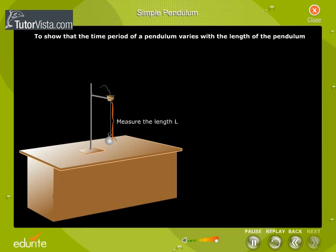Measure the length L from the middle of the bob to the lower edge of the split cork. Mark on the table the mean position of the pendulum as a reference point.